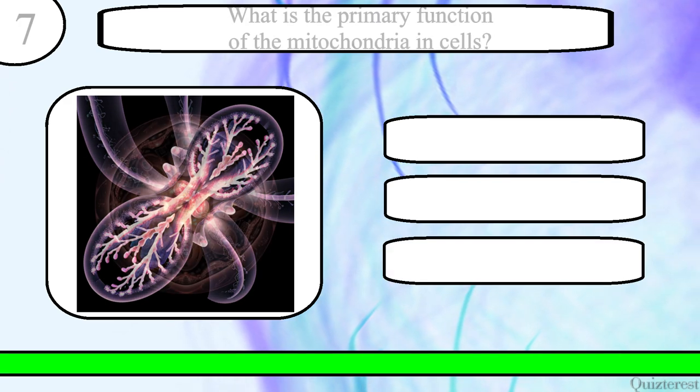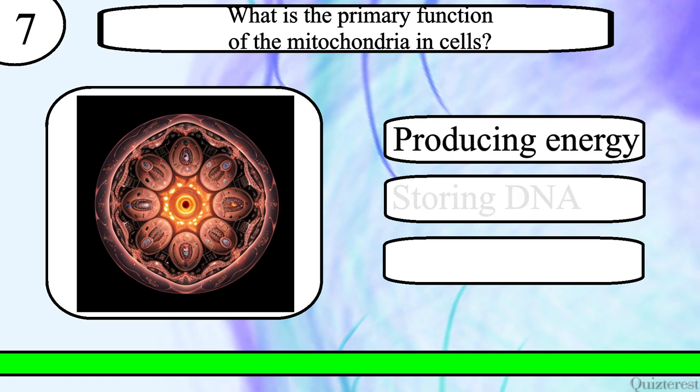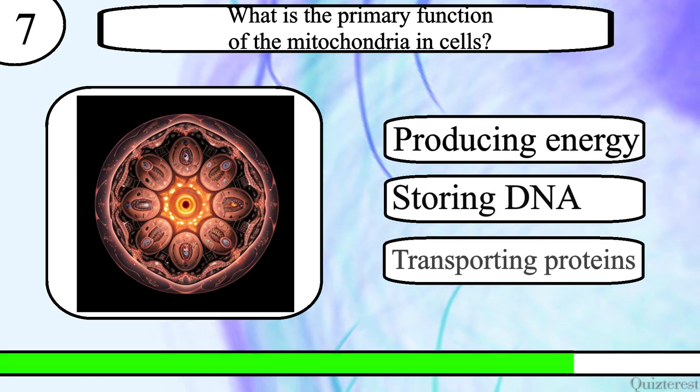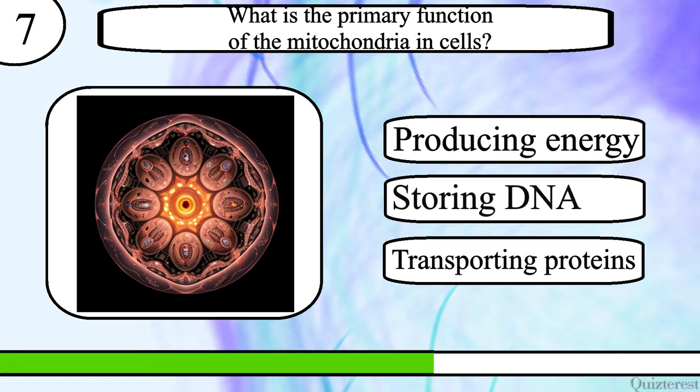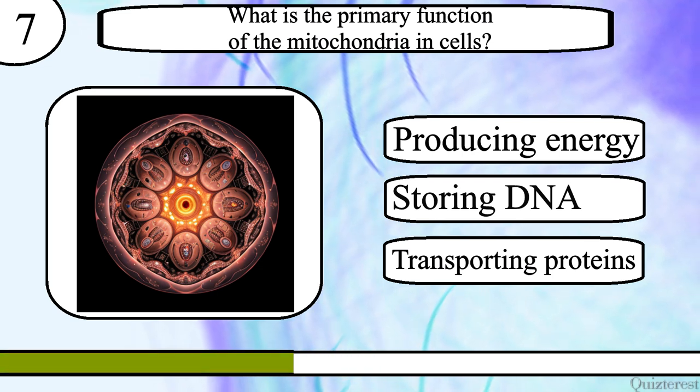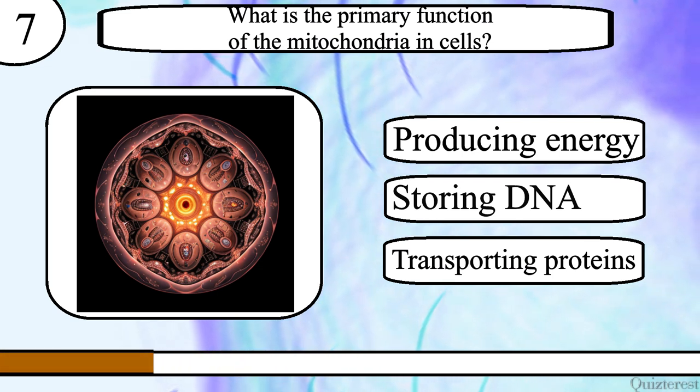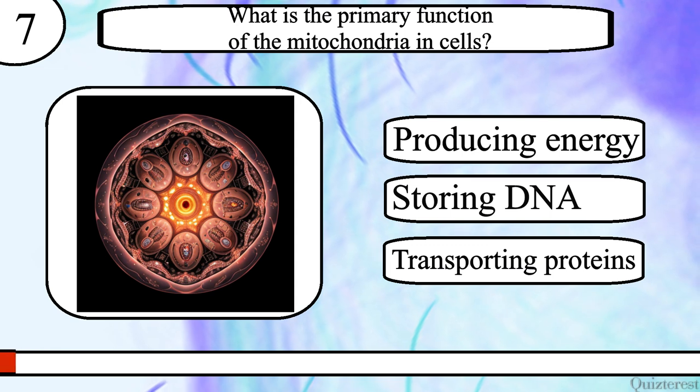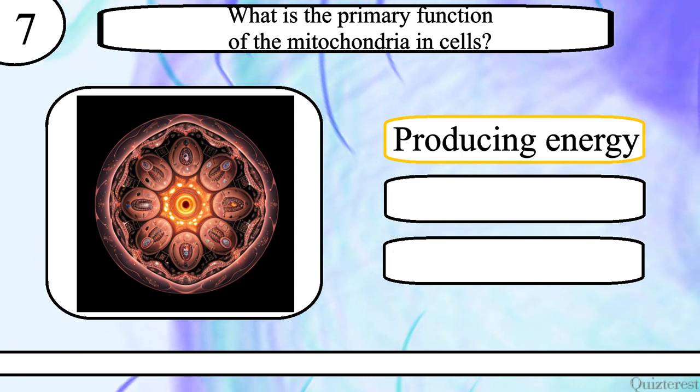Question 7. What is the primary function of the mitochondria in cells? Producing energy, storing DNA or transporting proteins? The correct answer is producing energy.